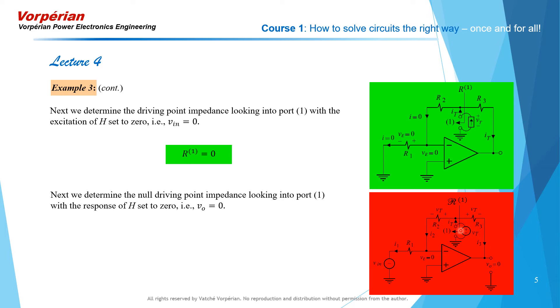That sets Vt directly appearing across R3 and R2. The output is nulled, so Vt appears across R3. The input is nulled, so Vt appears across R2, and therefore the current It splits between R3 and R2 in a parallel combination of R2 and R3. So that gives us the null impedance looking into port 1 as R2 parallel R3.